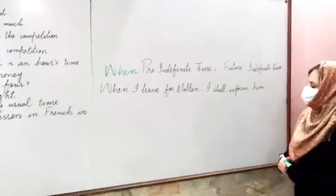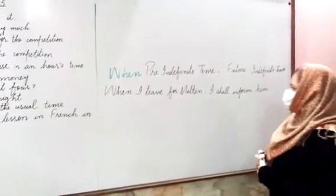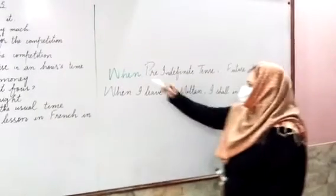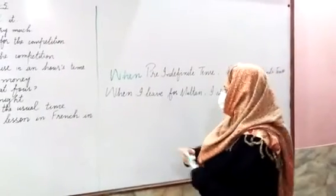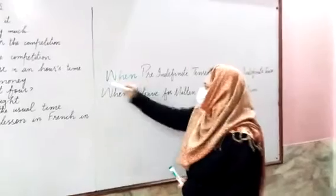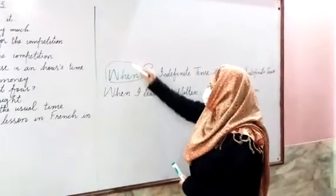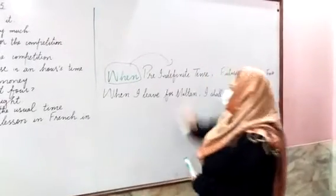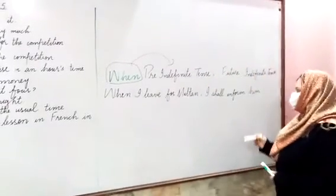Students, focus on this formula. There is a specific word: 'when.' When we use 'when,' then we will use present indefinite tense in the first clause. Then we put a comma, followed by future indefinite tense in the second clause.